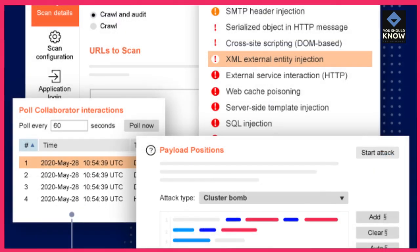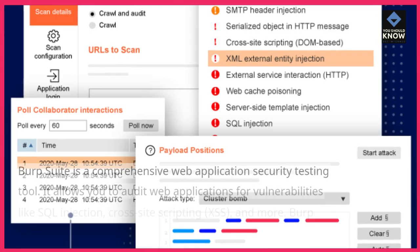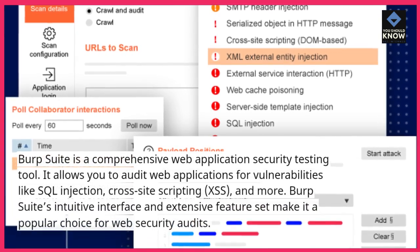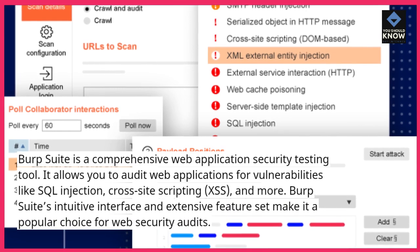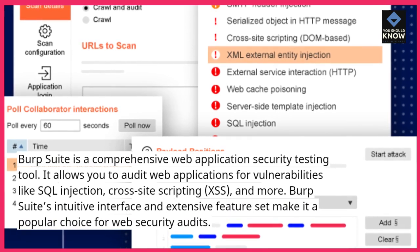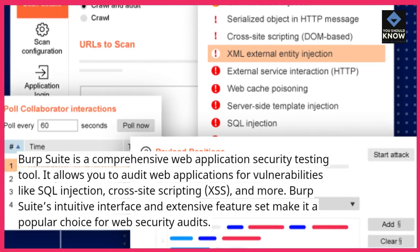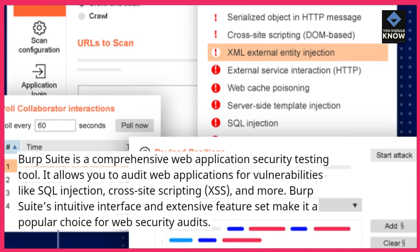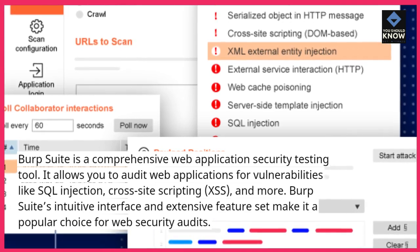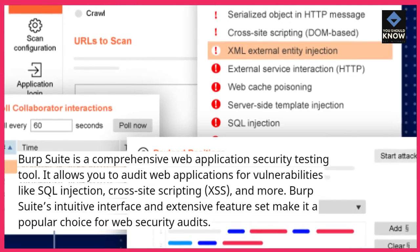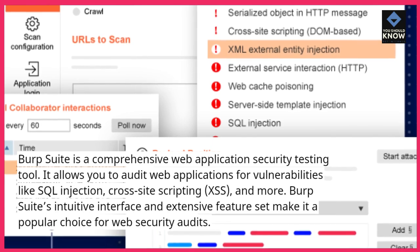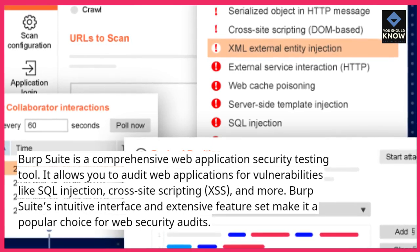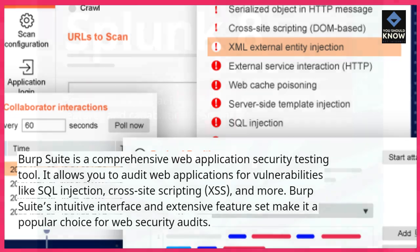7. BurpSuite. BurpSuite is a comprehensive web application security testing tool. It allows you to audit web applications for vulnerabilities like SQL injection, cross-site scripting (XSS), and more. BurpSuite's intuitive interface and extensive feature set make it a popular choice for web security audits.